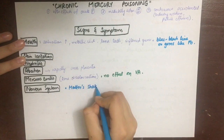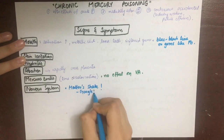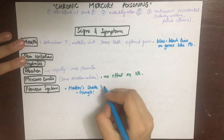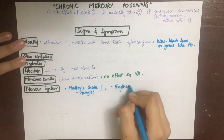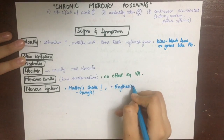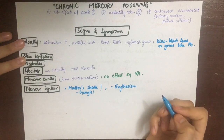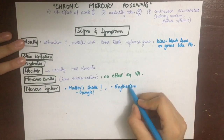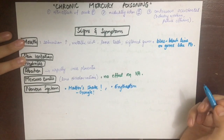Two important manifestations of chronic mercury poisoning on the nervous system are hatter's shake and erethism. Hatter's shake is a coarse intentional tremor affecting the hands, arms, tongue, and legs, common in hat industry workers. Erethism is a personality disturbance leading to shyness, irritability, tremors, loss of memory, and insomnia; it is common in mirror industry workers.